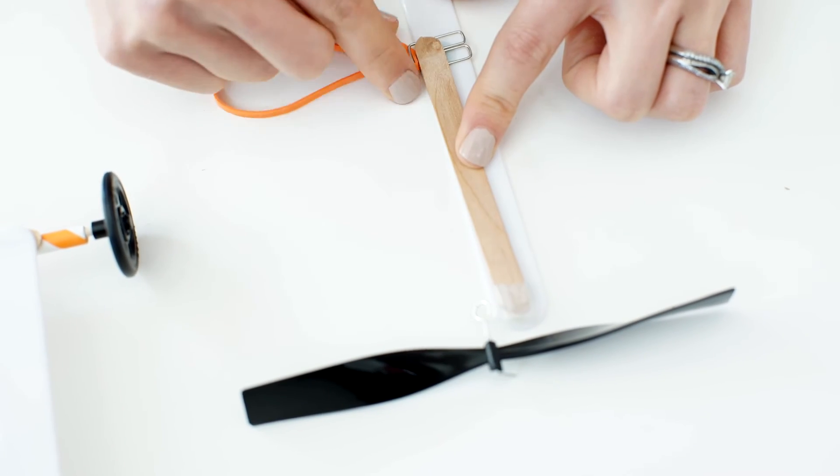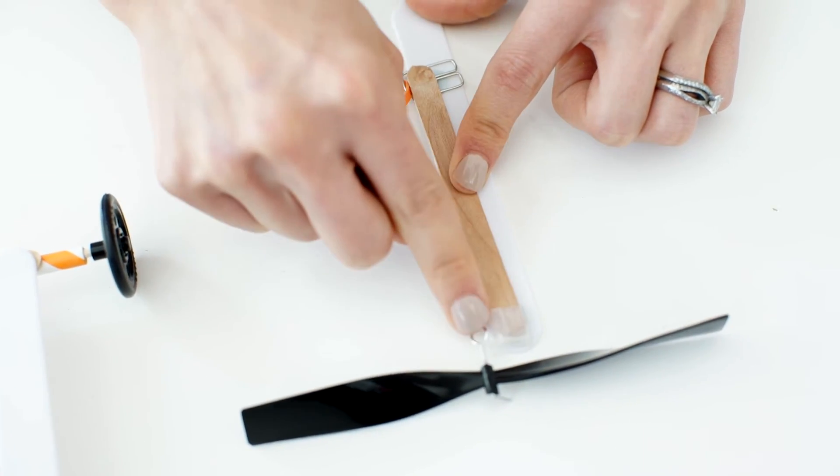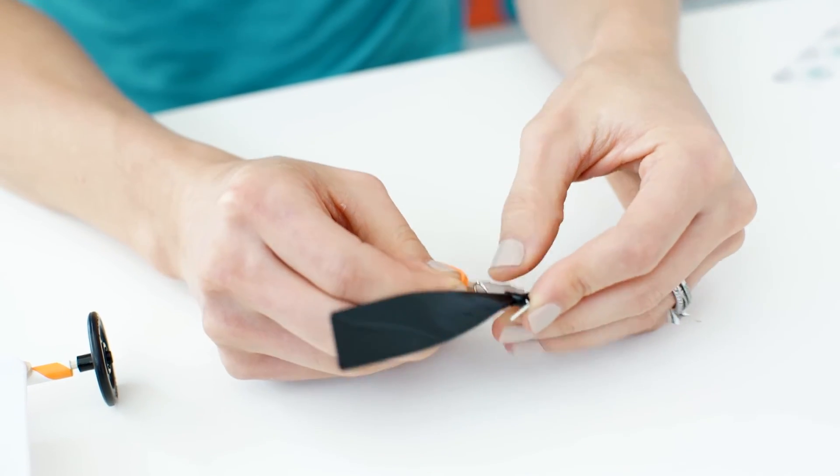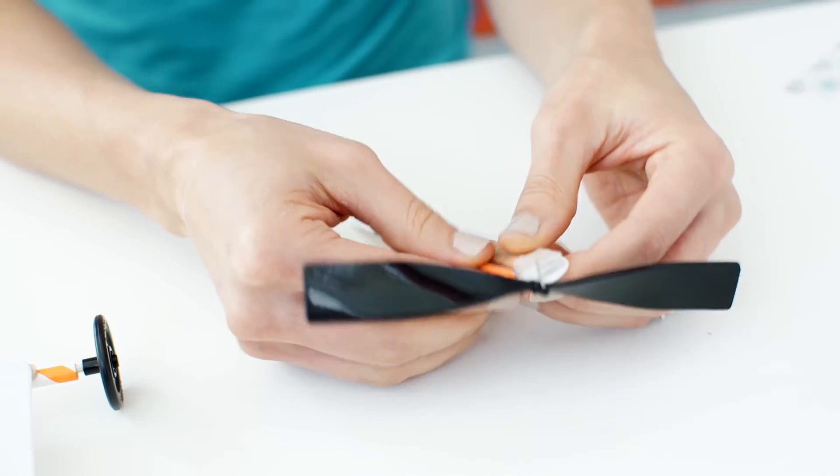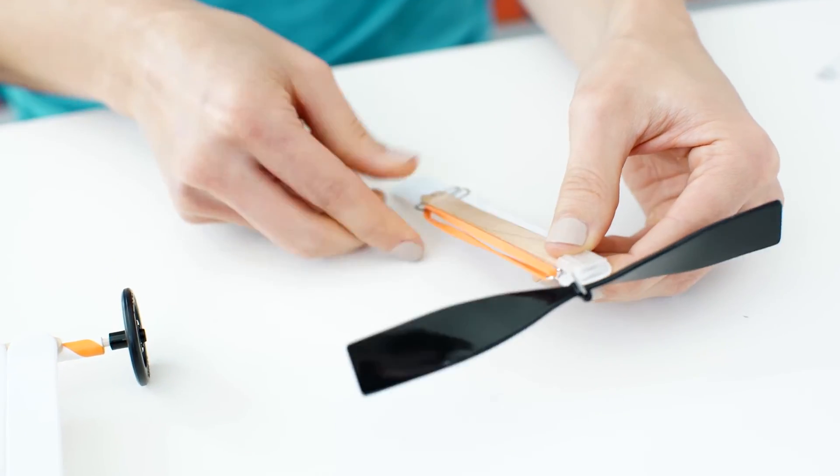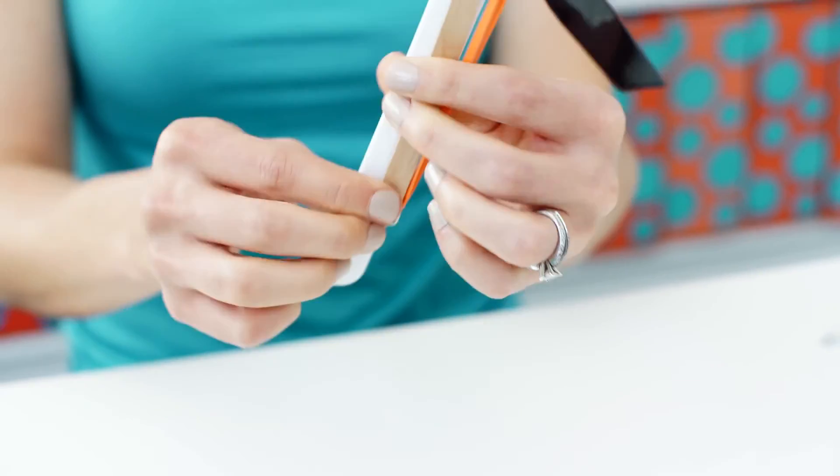Make sure the rubber band and hook are on the same side. Attach your rubber band to the hook. Test out your engine. Make sure you can move your rubber band freely.